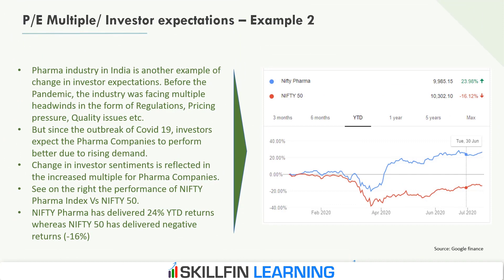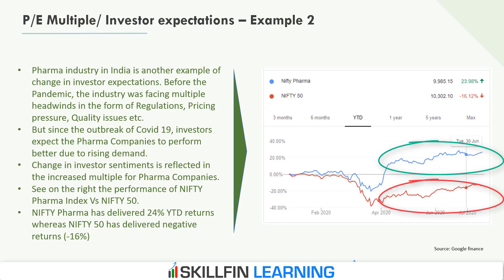A similar example is the Indian Pharma industry. Before the pandemic, the Indian Pharma industry was facing multiple headwinds in the form of pricing pressure, regulatory issues, and quality issues, resulting in low TSR performance. But since the outbreak of COVID-19, investors expect pharma companies to perform better compared to the overall market due to rising demand for medicines. The Nifty Pharma index delivered positive 24% year-to-date returns, whereas the Nifty 50 delivered negative 16%, driven by high expectations on future performance.